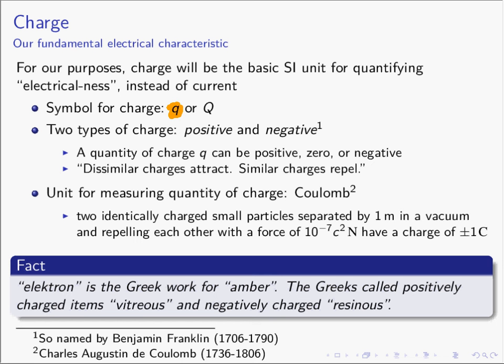Because of that, we sometimes say there are two types of charge: positive and negative. You just happen to have positive amounts of charge or negative amounts of charge. The terms positive and negative came from Benjamin Franklin, the American scientist who lived in the early 18th century. The unit for measuring charge is the coulomb, named after the French scientist Charles Augustin de Coulomb, who also lived in the 18th century.